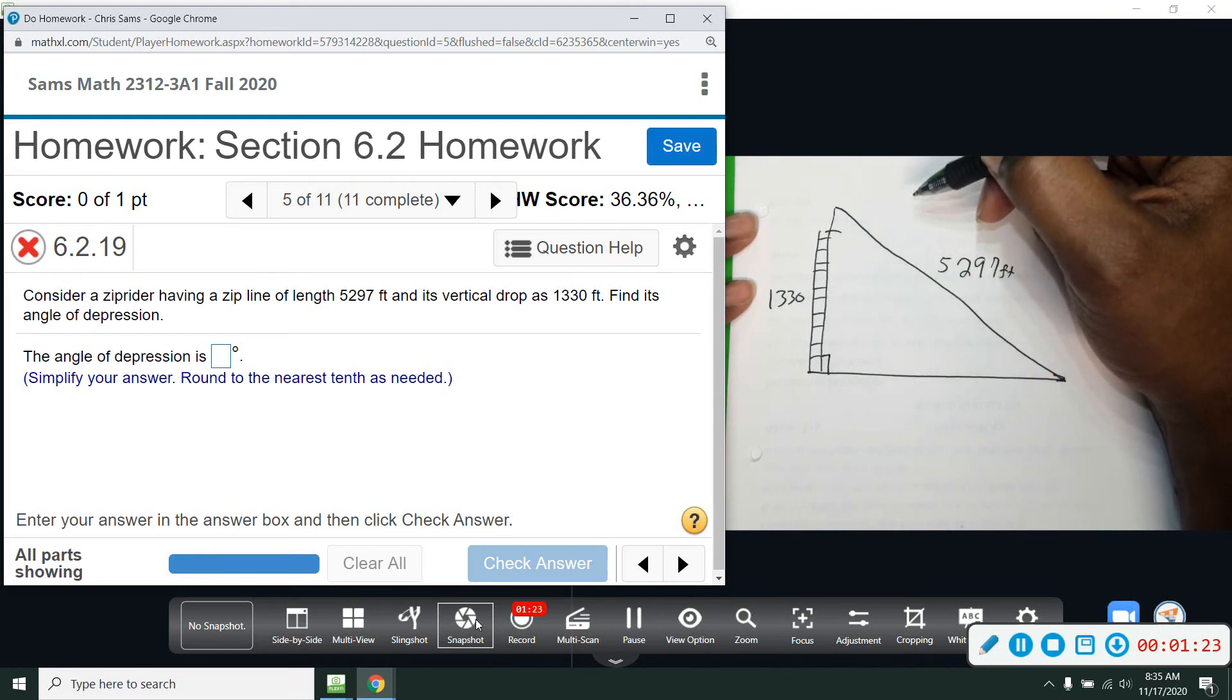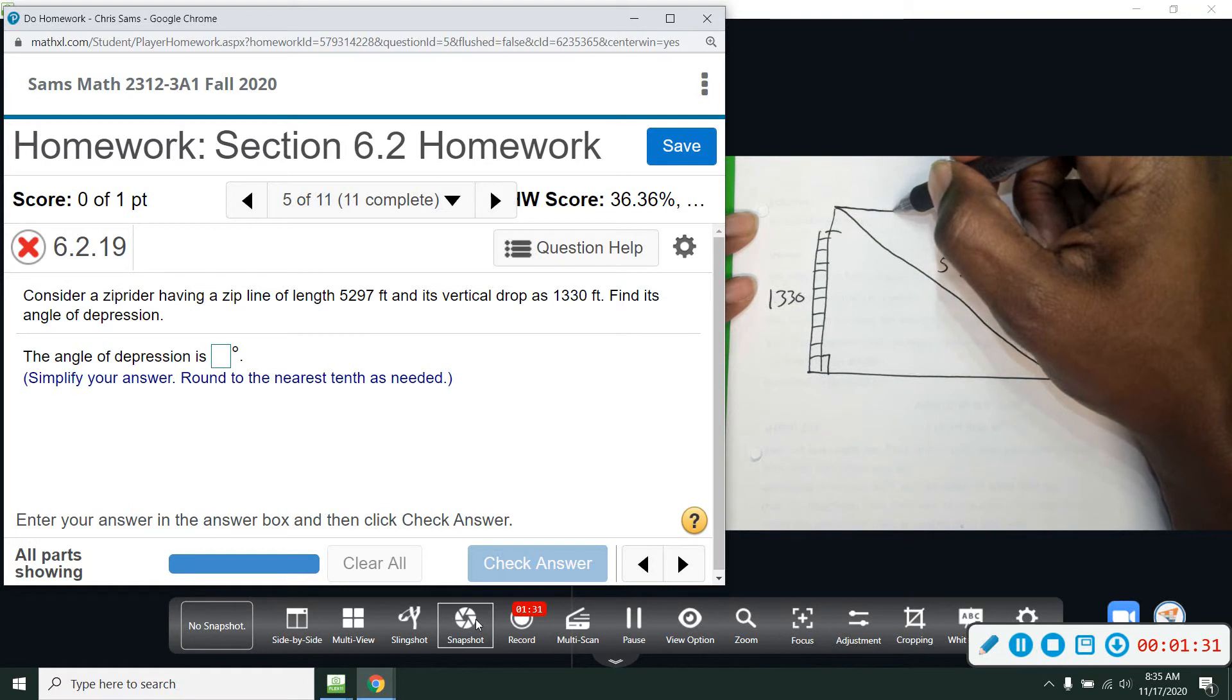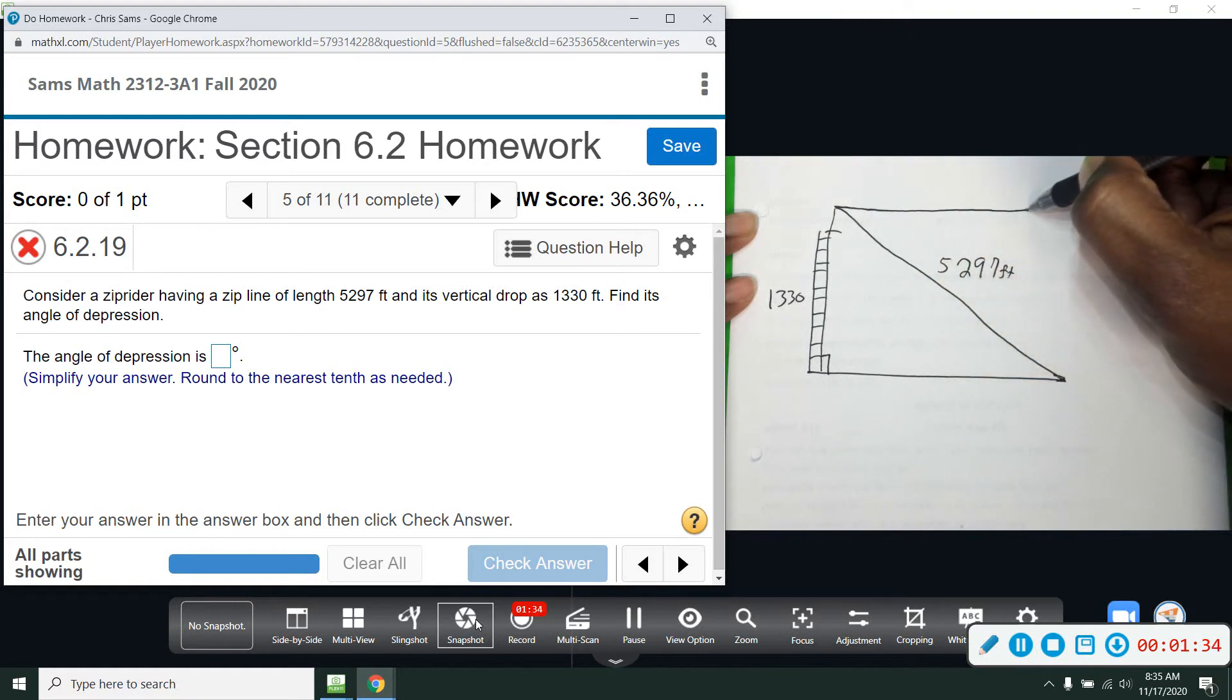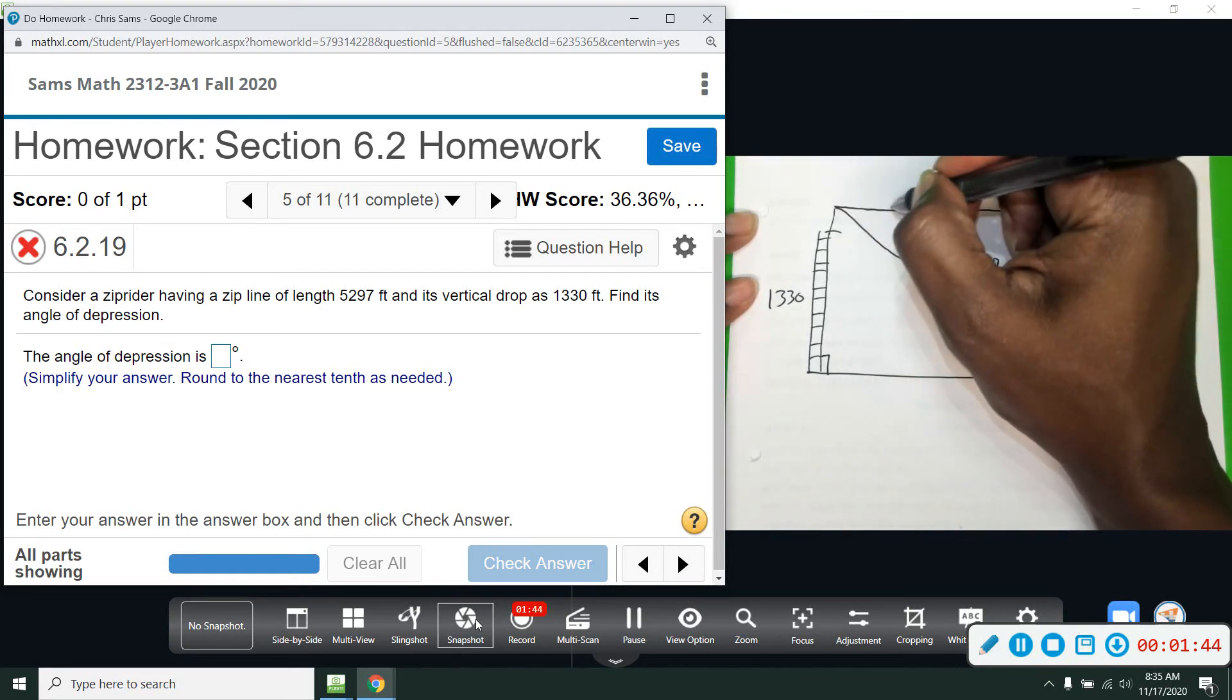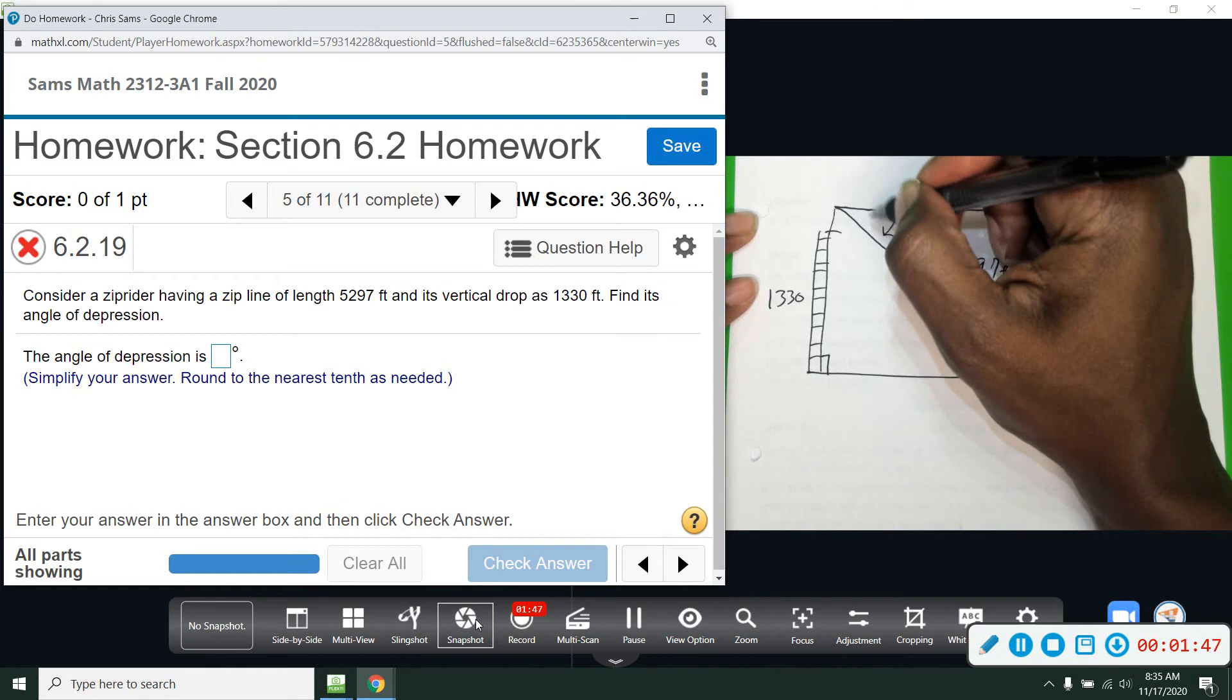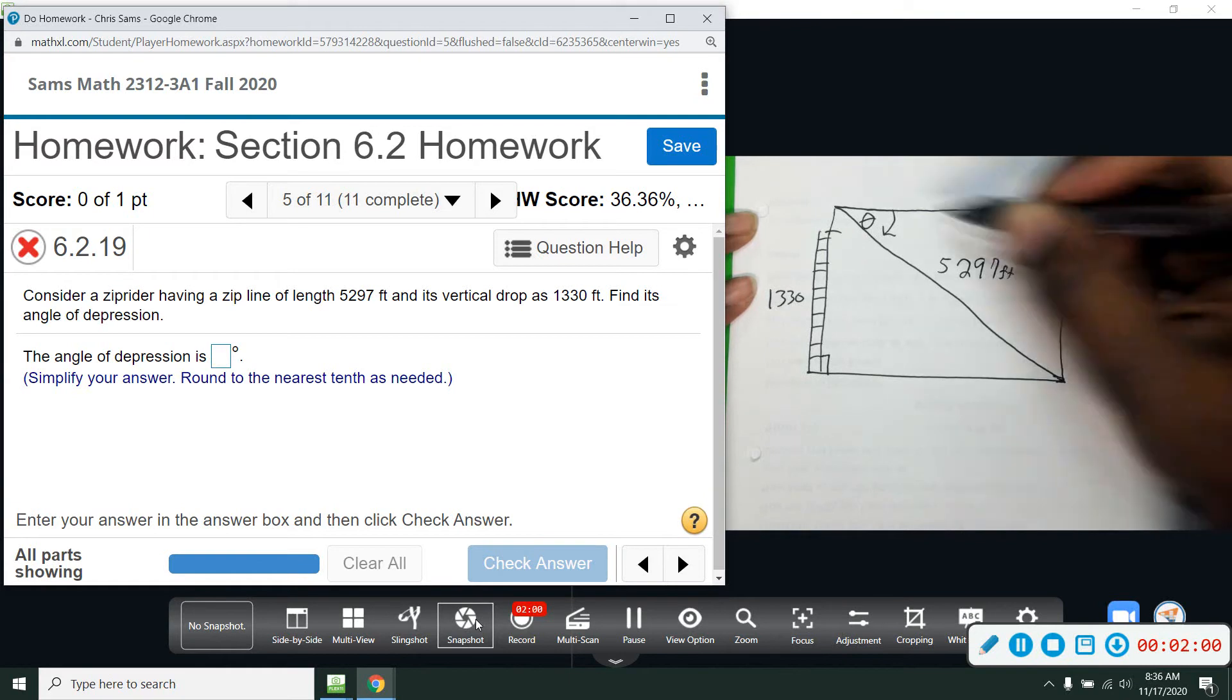So you kind of see a right triangle. However, they also want to know the angle of depression. The angle of depression is always defined as coming down from the horizontal or going up from the horizontal. So the angle of depression is here, it's the horizontal from the zip line and then coming down. So this angle. All we have to do is kind of mirror this. This vertical distance will still be 1330 and this is my right angle.